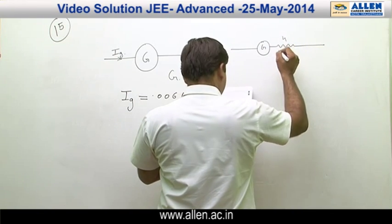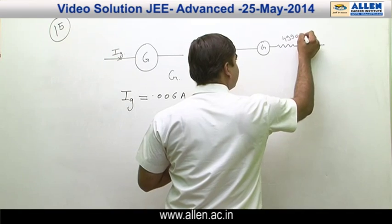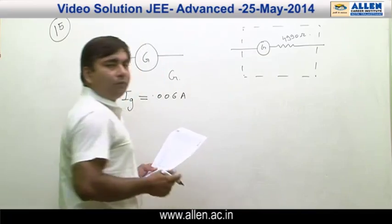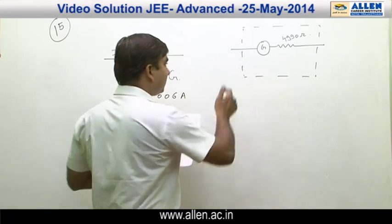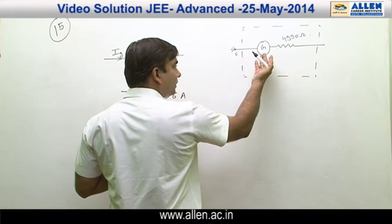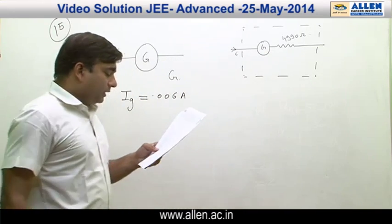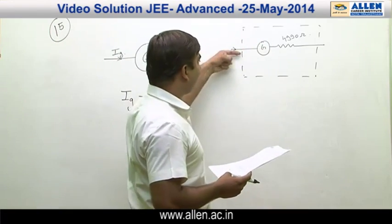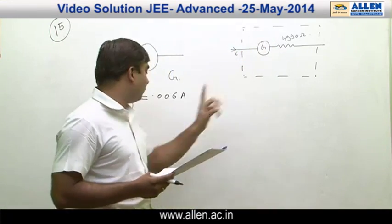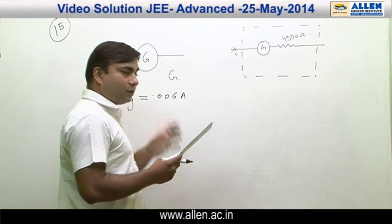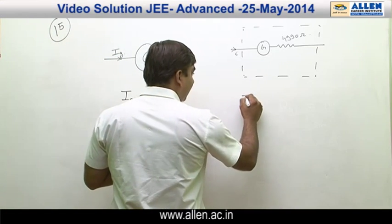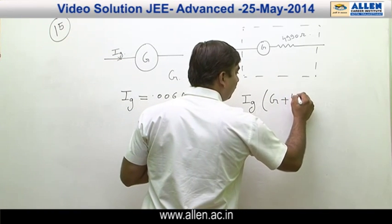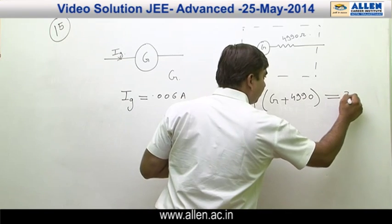With 4990 ohm resistance in series, this complete entity is called a voltmeter, and the voltage it measures is the current passing through it multiplied by the net resistance. It can be converted into a voltmeter of 0 to 30 volt range. Hence, 30 volts would be the reading at full scale deflection, giving the equation: IG × (G + 4990) = 30 volts, where IG = 0.006 ampere.